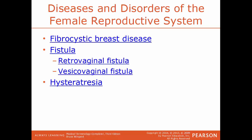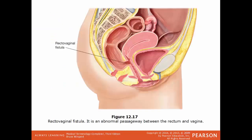Hysteratresia is a condition where you have a closure of the uterus. In this illustration, we have an example of a rectovaginal fistula. The rectum would be right here and the vagina would be here — those two should not be connected at all. But when this abnormal passageway is created, that space right there would be the fistula.